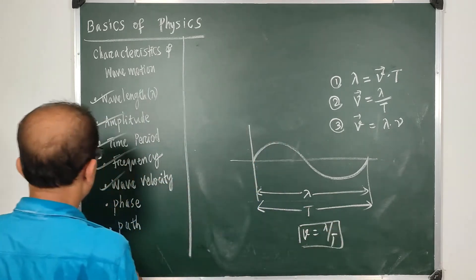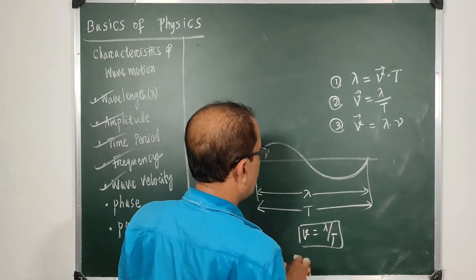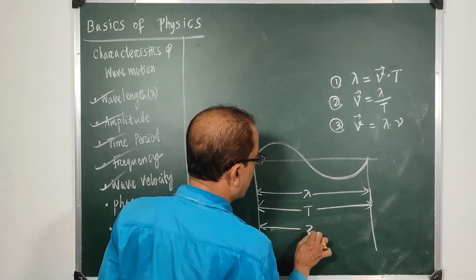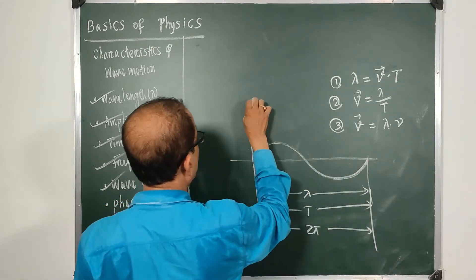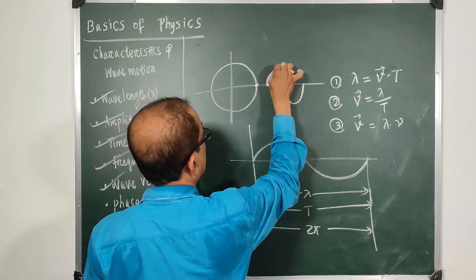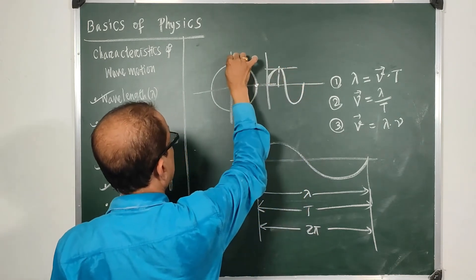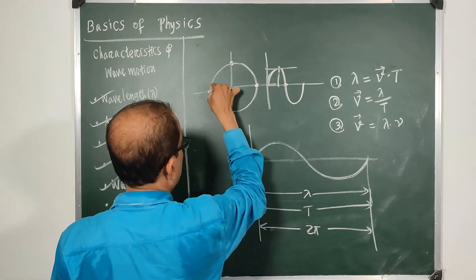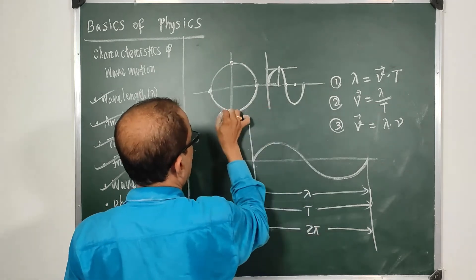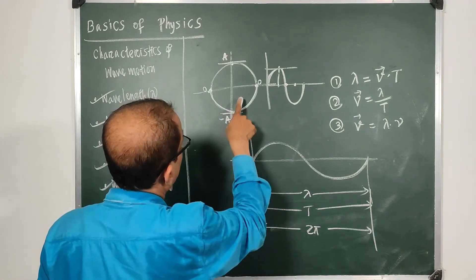Next we cover phase and path. The wavelength λ from one point to the next can also be expressed in terms of angle. Thinking of circular motion: as the motion starts, the first 90° brings the particle to the amplitude; after 180° it returns to the node; after 270° it reaches the other amplitude; and at 360° the full motion is complete.